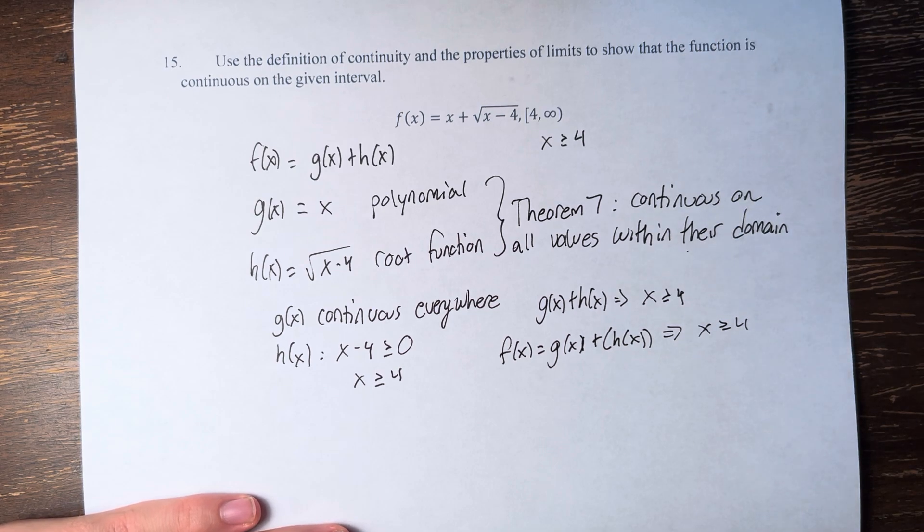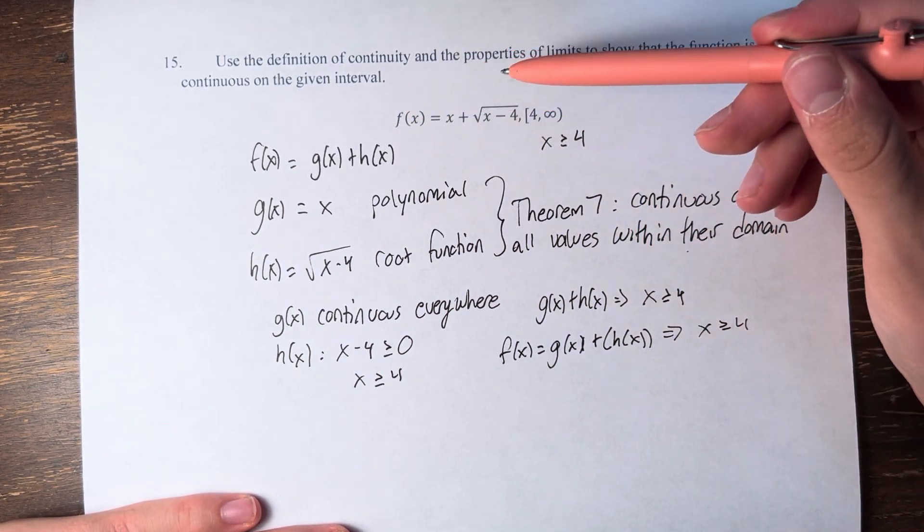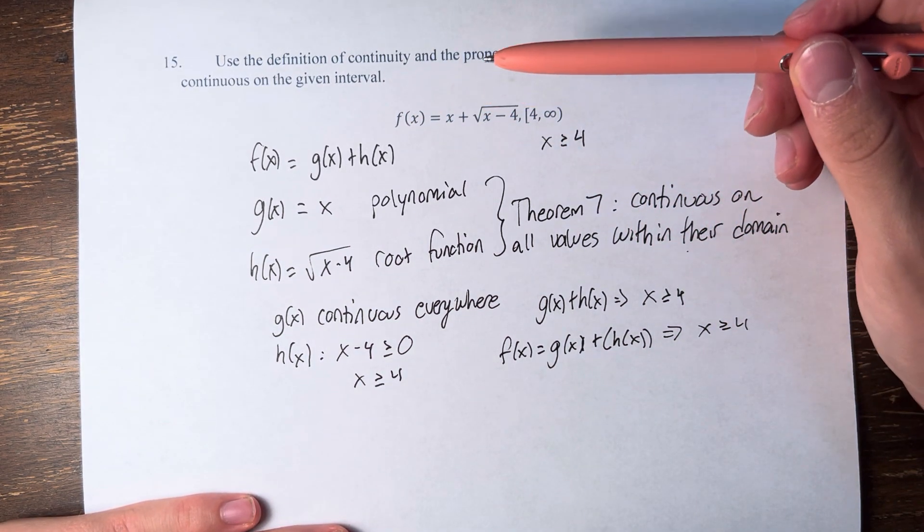This is the interval that we were looking for in the first place. Therefore, f of x is equal to x plus the square root of x minus 4 is continuous from 4 to infinity.